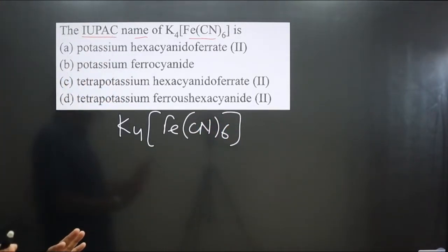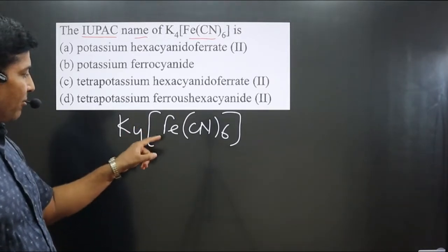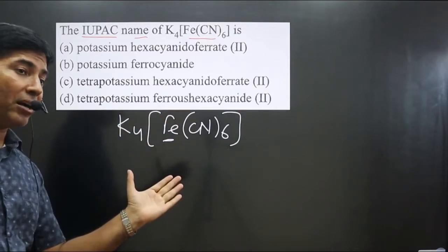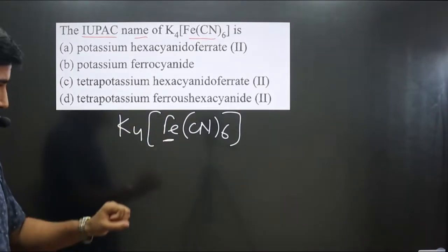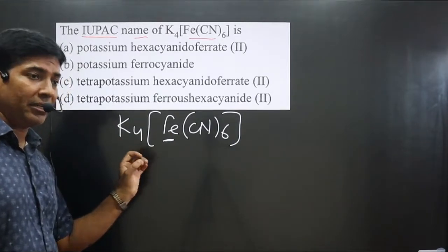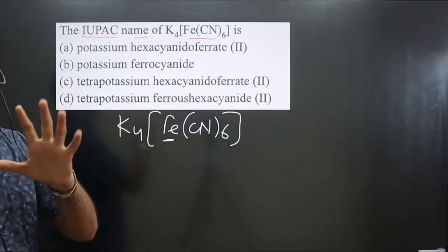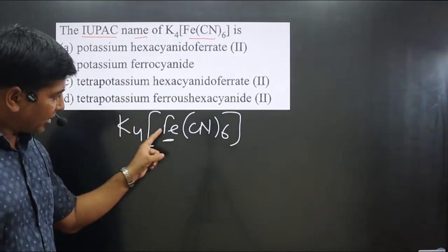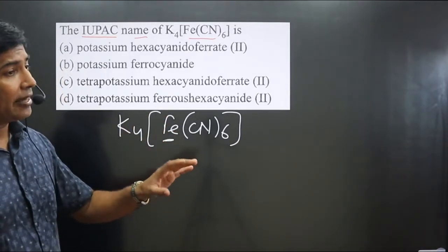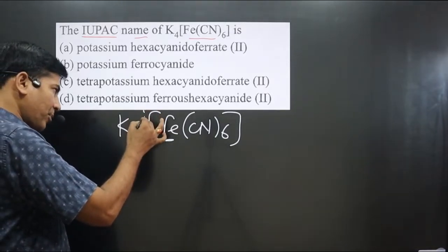Before naming the complex, always determine whether the central element is present in the cationic part or the anionic part. If the central element is in the cationic part, we use the common name given in the periodic table. If it is in the anionic part, we use the special name.